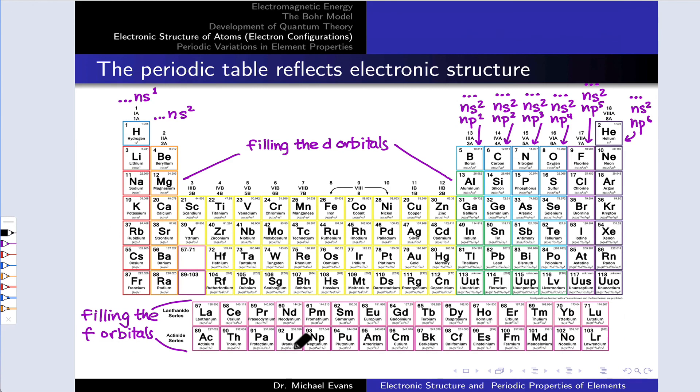Before we get into the nitty-gritty of describing electron configurations and deducing electron configurations, one thing I want to point out is that the periodic table reflects how we fill the atomic orbital scaffold.